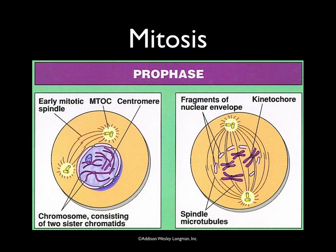Moving into the actual process of mitosis, we begin to see quite a few distinct changes. The first phase of mitosis is called prophase, and we can divide this into two separate stages: early prophase and late prophase. In prophase several important things happen: the nuclear envelope begins to disintegrate, chromosomes start to condense with the help of histone proteins, and the spindle apparatus begins to form. Progressing to late prophase, the nuclear envelope has completely disintegrated, the chromosomes have completely condensed, and spindle fibers begin to attach to the replicated chromosomes at a region called the kinetochore.